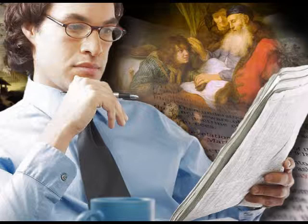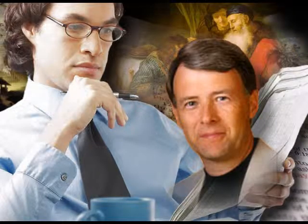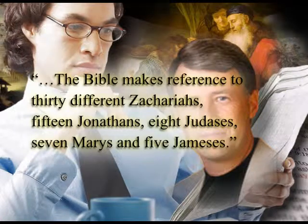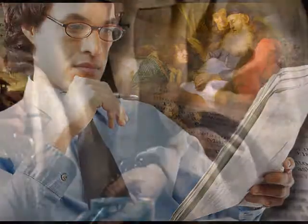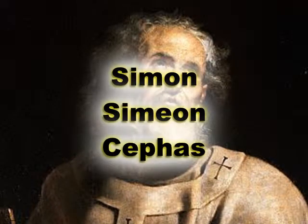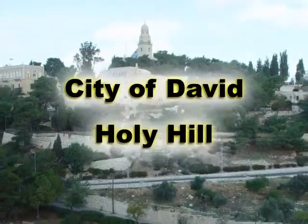Be very careful that you are researching the correct person or place in the Bible. Ken Molman, author of Bible Research, made the following observation: the Bible makes reference to 30 different Zechariahs, 15 Jonathans, 8 Judases, 7 Marys, and 5 Jameses. Also be careful to identify the various names that may apply to one individual or location. For example, the Apostle Peter was also known as Simon, Simeon, or Cephas. Also, Mount Zion in the Bible is also known as the City of David and the Holy Hill.